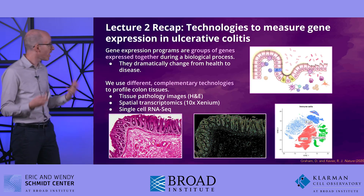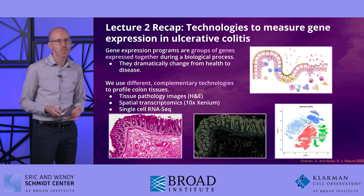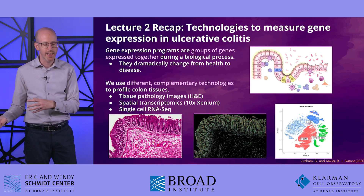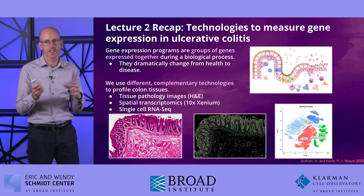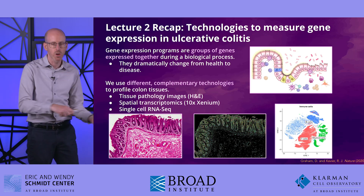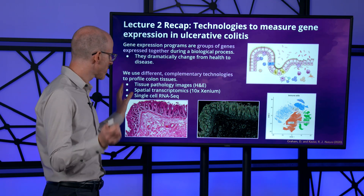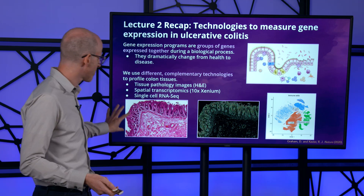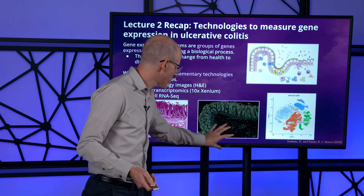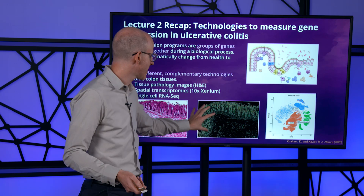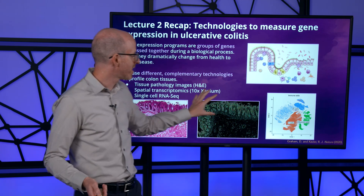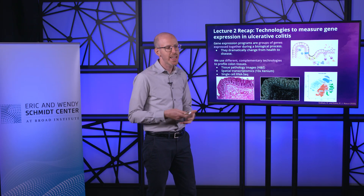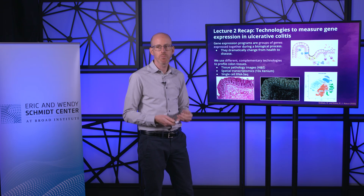In the second lecture, we covered the technologies used to measure gene expression programs. Gene expression programs are groups of genes that are turned on and regulated together during a biological process, and they dramatically change from health to disease — from health to ulcerative colitis, or from healthy colon to colorectal cancer. We introduced three technologies to profile colon tissues: H&E stains, spatial transcriptomics measurements where we can profile hundreds of genes while maintaining spatial information, and single-cell RNA-seq where we measure thousands of single cells and get gene expression for all 20,000 genes but lose the spatial information.